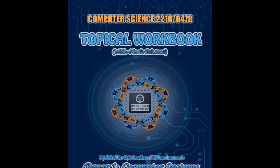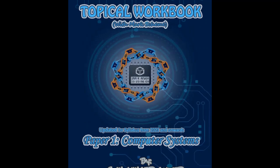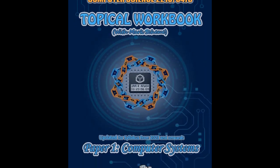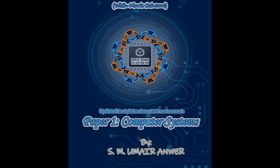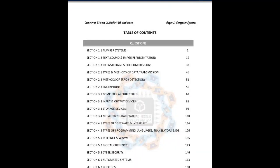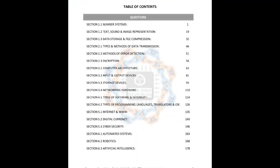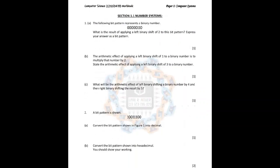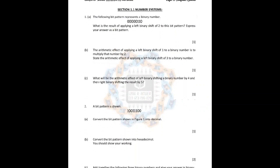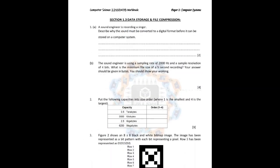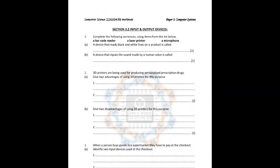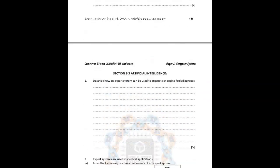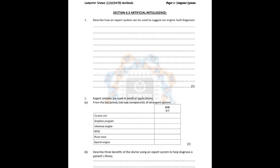Let me introduce the topical workbook for Computer Science 2210 or 0478. This is workbook one for Paper One — Computer Systems. As you can see from the table of contents, I've included questions on each and every subtopic from the syllabus along with the mark scheme. Here is a preview from sections 1.1, 1.3, 2.2, 3.2, 5.3, cyber security, and artificial intelligence.